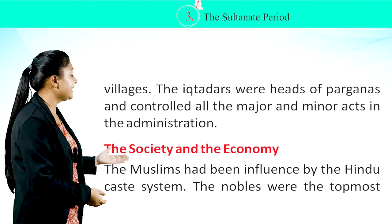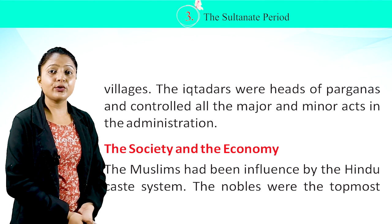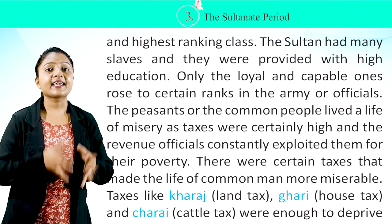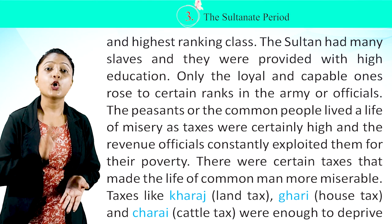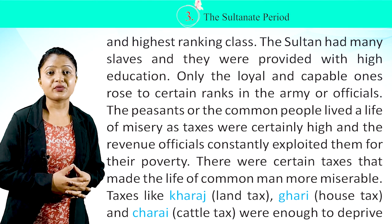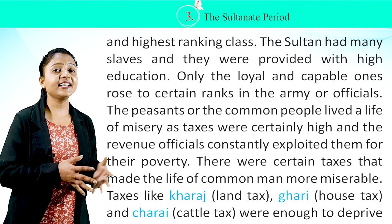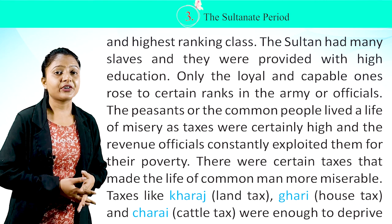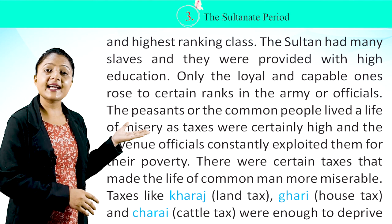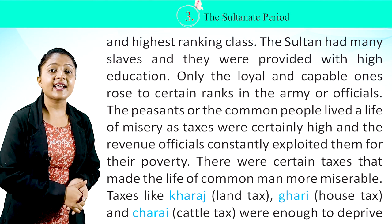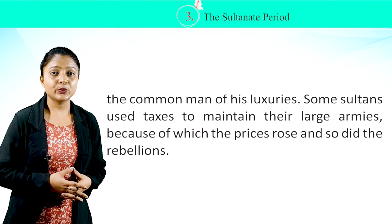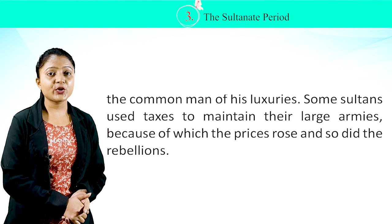The Society and the Economy: The Muslims had been influenced by the Hindu caste system. The nobles were the topmost and highest-ranking class. The Sultan had many slaves who were provided with high education, and only the loyal and capable ones rose to certain ranks in the army or as officials. The peasants and common people lived a life of misery as taxes were high and revenue officials constantly exploited them. Taxes such as kharaj (land tax), ghari (house tax), and charay (cattle tax) deprived the common man of basic luxuries. Some sultans used taxes to maintain their large armies, causing prices to rise and rebellions to increase.